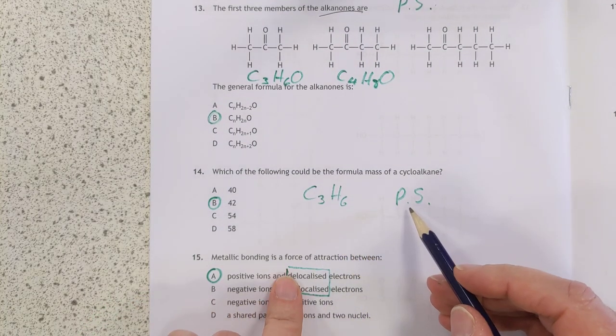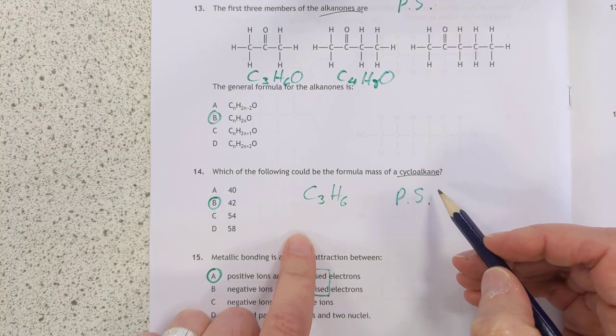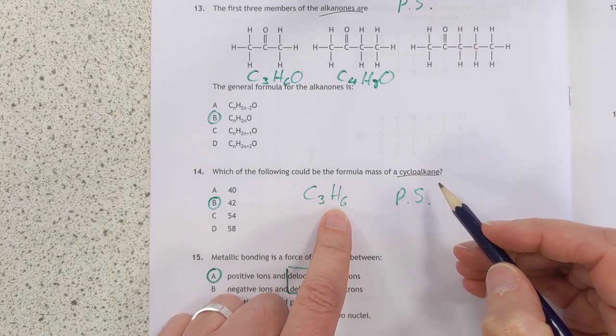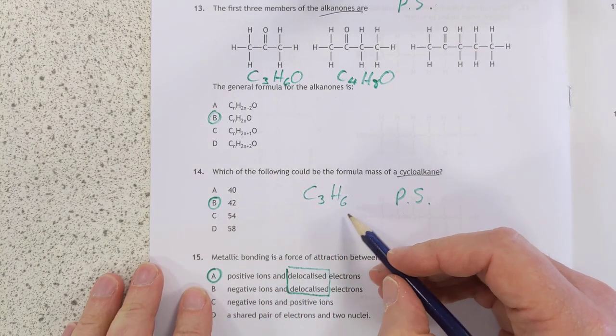14. Problem solving again. A cycloalkane. I just started with the smallest cycloalkane, worked out what the GFM, gram formula mass, was. 3 times 12 are 36, plus 6 is 42.